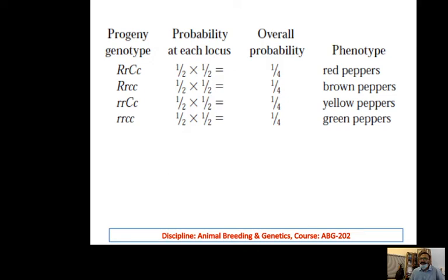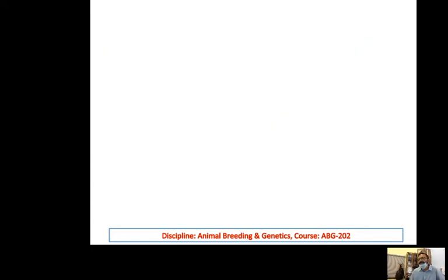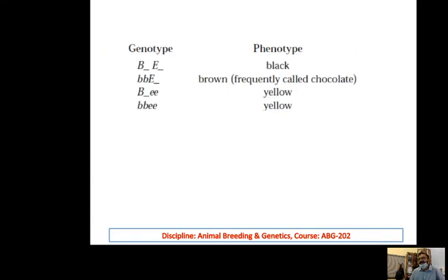This is basically a deviation from classical Mendelism. We would expect a 9:3:3:1 ratio, but instead it's 1/4 for each of these phenotypes. And that is because of gene interaction.